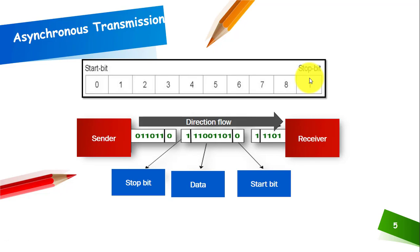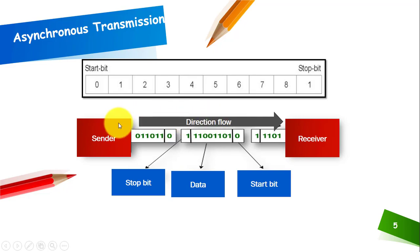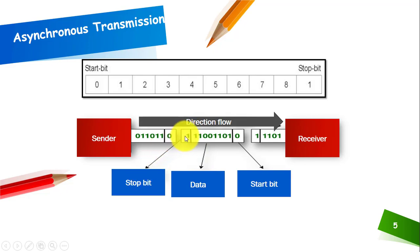The start bit is zero and the stop bit is one. This is the sending device and this is the receiving device. You can see the data to be sent. The start bit and stop bit must be present before each byte.